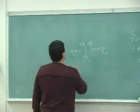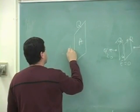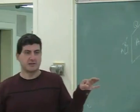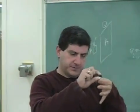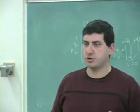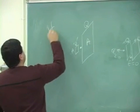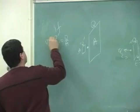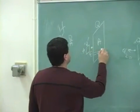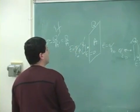Their physical size doesn't have to be the same. You could have a small sheet with charge Q over area A and a large sheet with charge Q prime over area A prime. As long as Q over A equals Q prime over A prime — that is, as long as their surface charge densities sigma are equal — the electric field in the middle would be zero, and the electric field on each outer side would be sigma over ε₀.